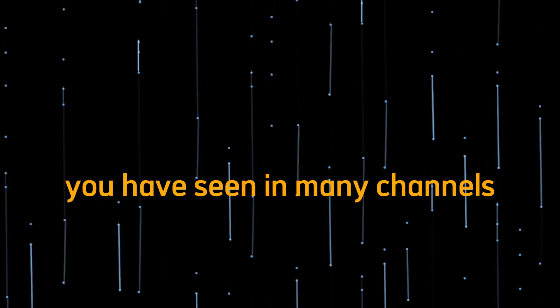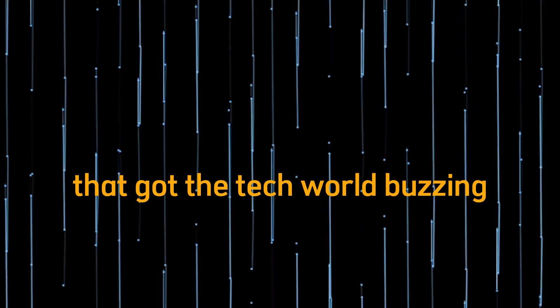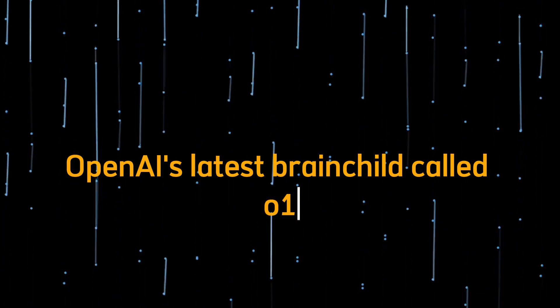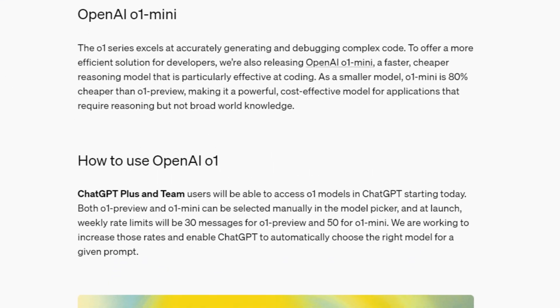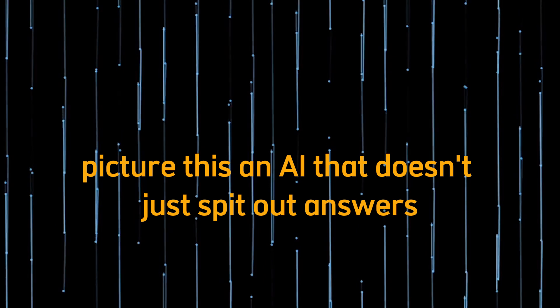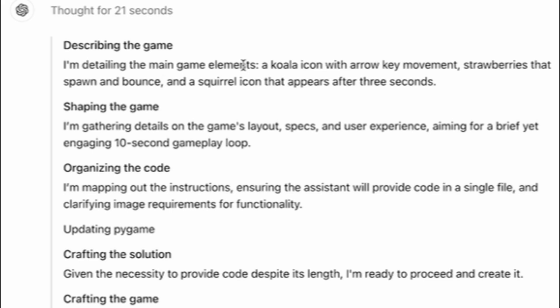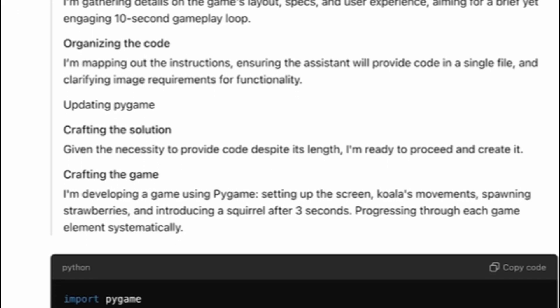Today we are tackling a hot topic that you have seen in many channels that got the tech world buzzing: OpenAI's latest brainchild called o1. Picture this, an AI that doesn't just spit out answers like a trivia machine on steroids, but one that actually thinks.